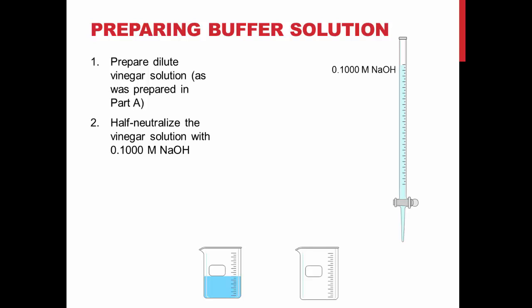Pipet 25 mL of your diluted vinegar solution into a 250 mL beaker, and using a burette, add half the amount of sodium hydroxide required to reach the equivalence point of your titration in Part A. Add 75 mL of deionized water to the beaker using a graduated cylinder.